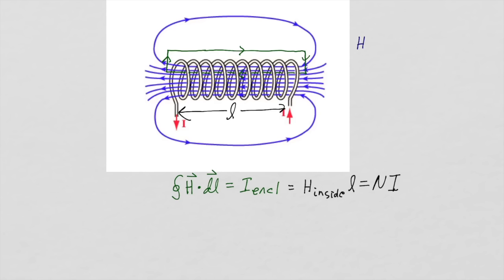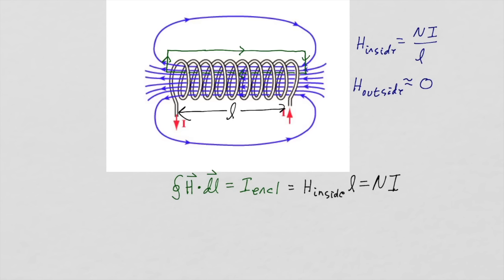So inside the coil the magnetic field intensity H is the number of turns N times the current I divided by the length L. The magnetic field intensity outside is very weak, so we'll consider it as zero. The strength of the magnetic field intensity scales with the number of turns per unit length for the coil. Also, the direction of the magnetic field intensity is along the length of the coil. Our path of integration could have been anywhere inside the coil and we would have gotten the same result, which tells us that the magnetic field intensity is the same everywhere inside the coil, with the value of NI over L.